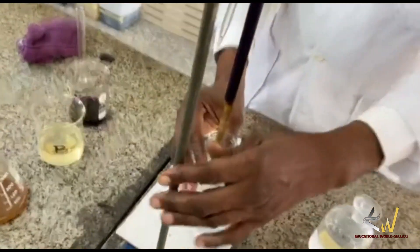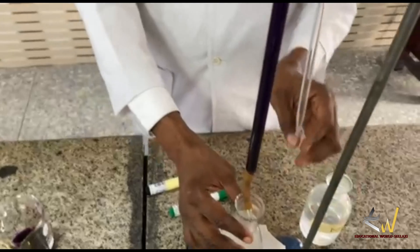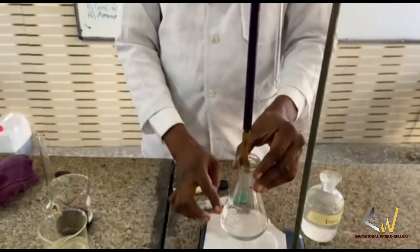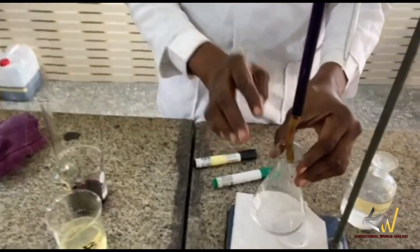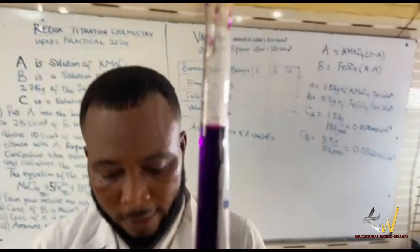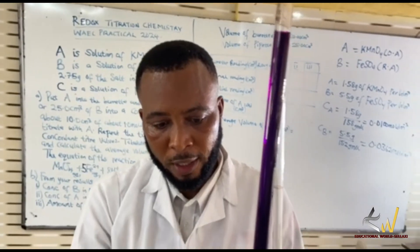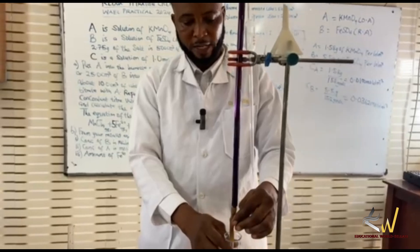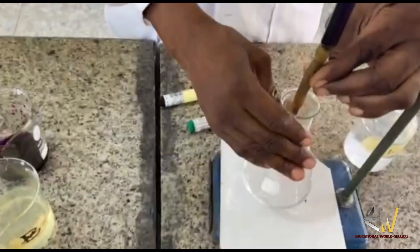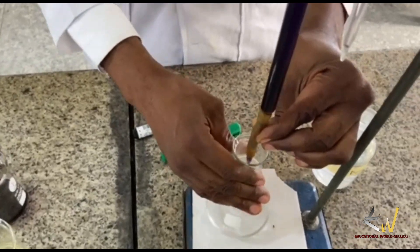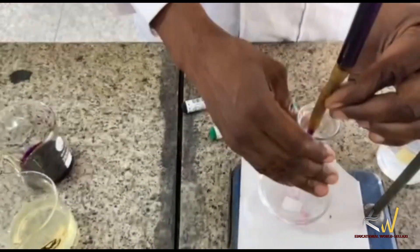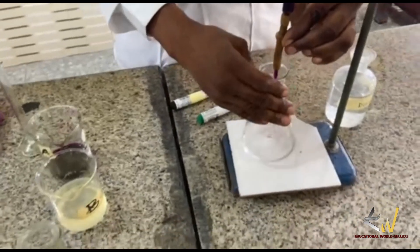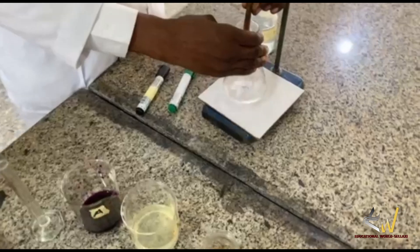I titrate now — watch as I do it. The KMnO4 is purple in color. When it touches the iron(II) sulfate, the purple color disappears and decolorizes. Keep swirling. Be careful so it doesn't spill. Be watchful for when it changes to a permanent pink color.